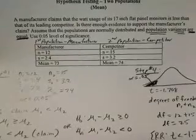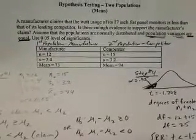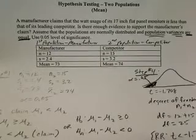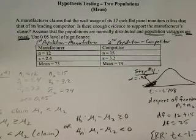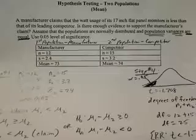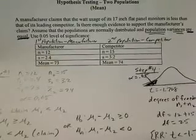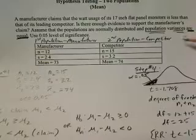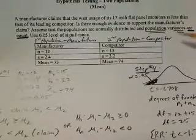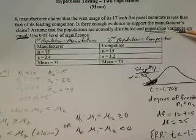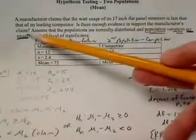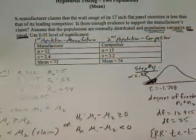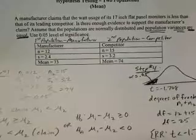This is a hypothesis test about two population means. The manufacturer claims that the watt usage of its 17-inch flat panel monitors is less than that of its leading competitor. Is there enough evidence to support the manufacturer's claim? Assume that the populations are normally distributed and the population variances are equal. We're going to use a 0.05 level of significance.